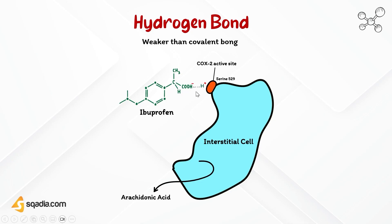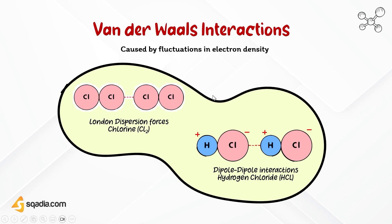The hydrogen bond stabilizes the interaction between ibuprofen and COX-2, aiding in the binding of the drug to its target. This interaction is important for the inhibitory effect of ibuprofen on COX-2 — it prevents the conversion of arachidonic acid to prostaglandins, thereby reducing pain and inflammation. Hydrogen bonds can also help orient the drug molecule in the binding site, ensuring optimal fit and enhancing selectivity and affinity for the target receptor.